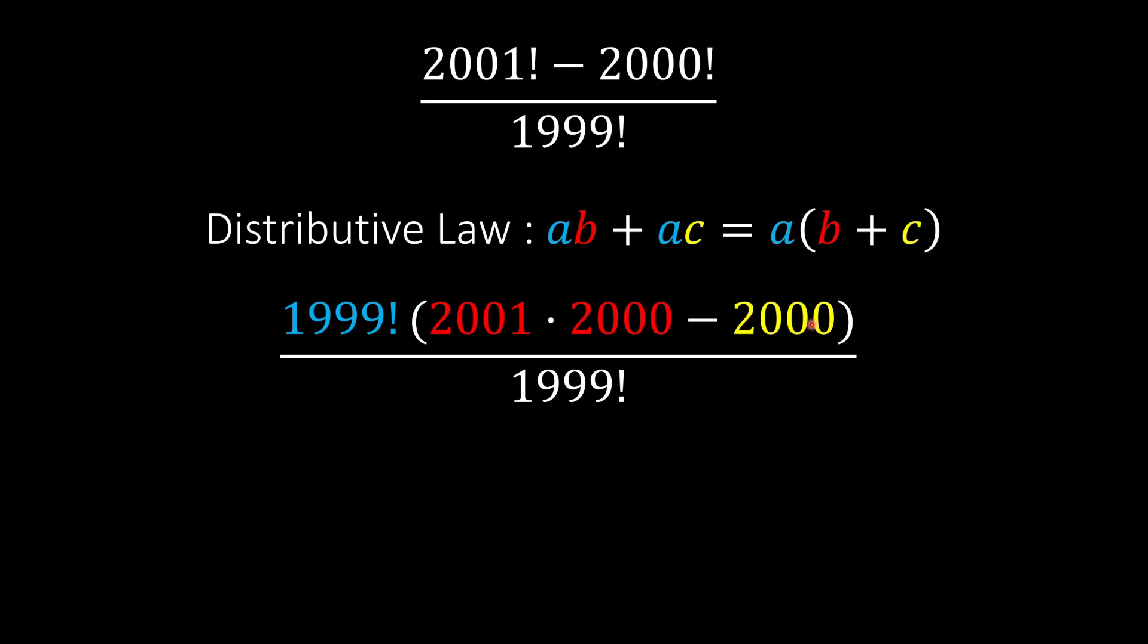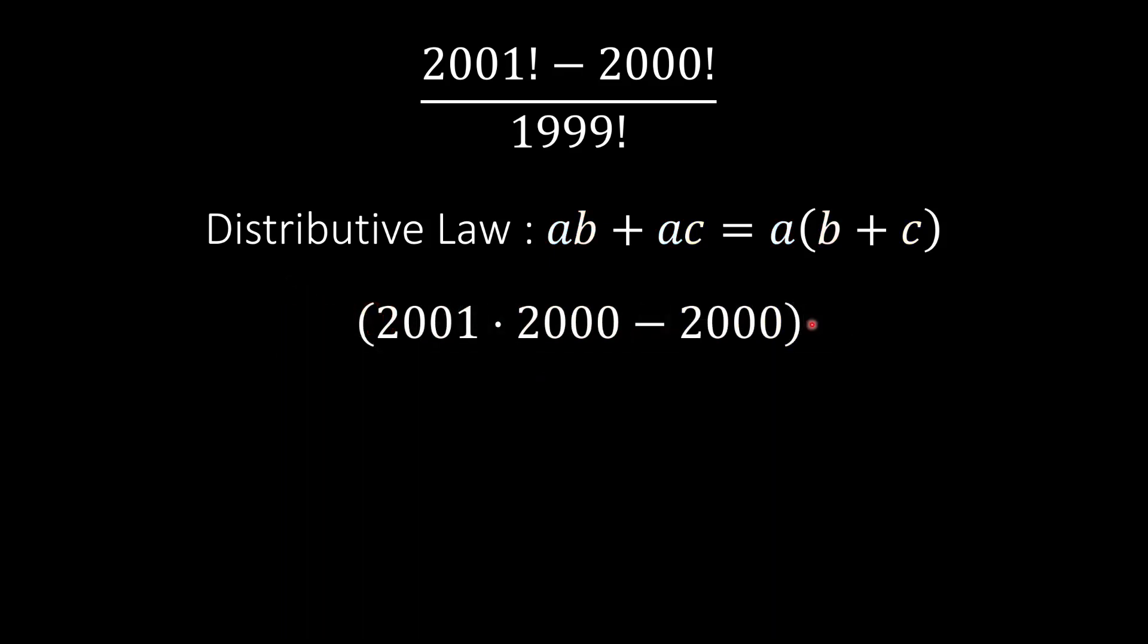We cancel the 1999 factorial in the denominator. Now we're left with an expression we can put in the calculator to get the answer. So 2001 multiplied by 2000 minus 2000 gives us 4 million.